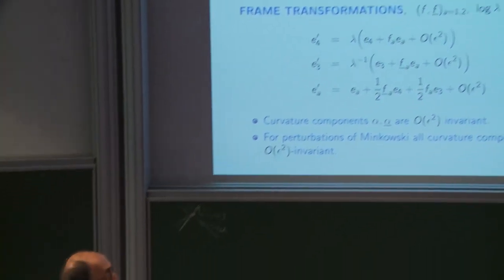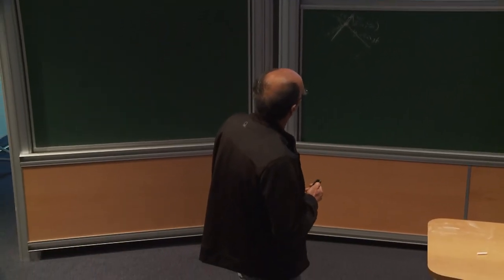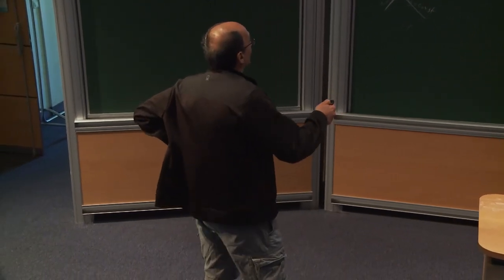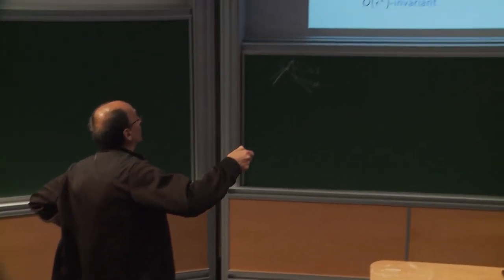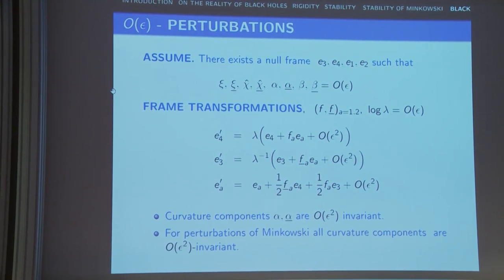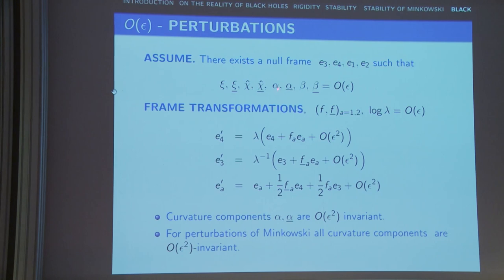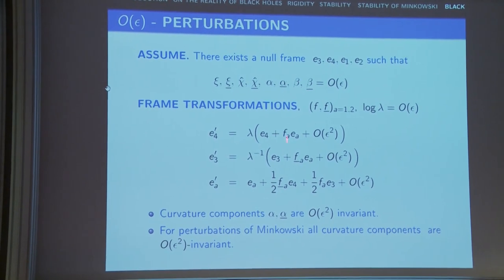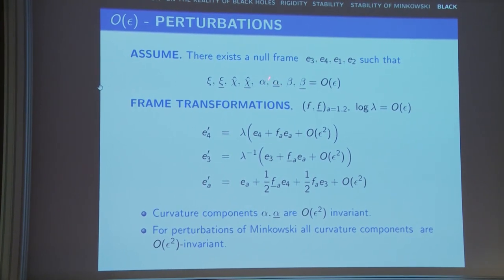As I mentioned, the gauge condition is fundamental — if I don't have a correct gauge condition, I have no chance to prove stability of the Kerr solution. Finding the correct gauge is really at the heart of the problem. Now the remarkable fact is: if you look at how things transform under frame transformations, alpha and alpha-bar are O(epsilon-squared) invariant. In other words, if I start with a frame, calculate alpha and alpha-bar, and make this change, the difference between alpha-prime and alpha is O(epsilon-squared). These do not depend on the choice I make, which is extremely important.